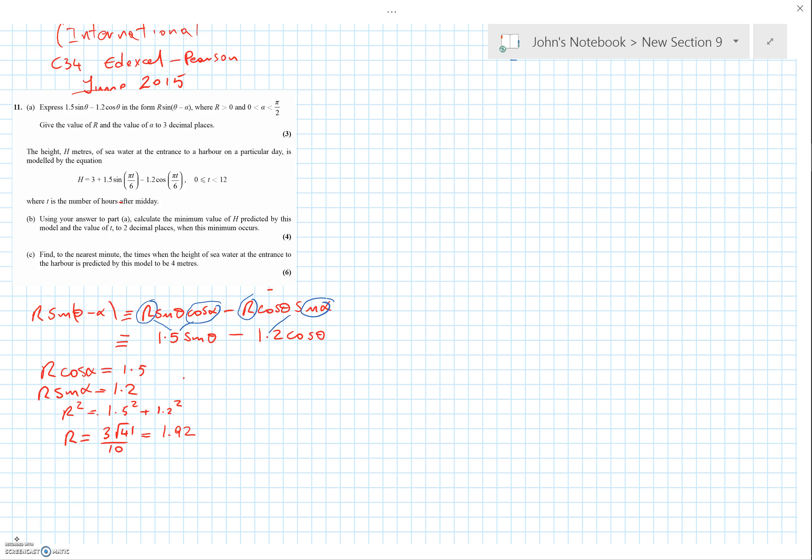To find the alpha part, we can just divide them. That quickly gets us tan α using the identity sin/cos, which is 1.2 over 1.5. That gets us to alpha when we work out the inverse tan.